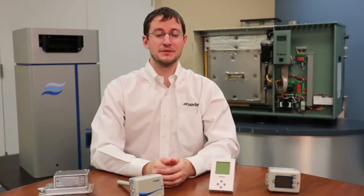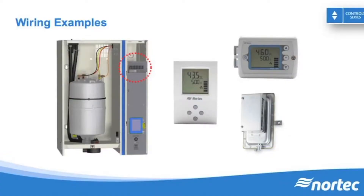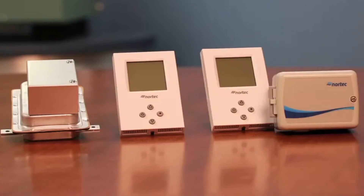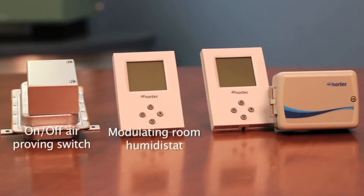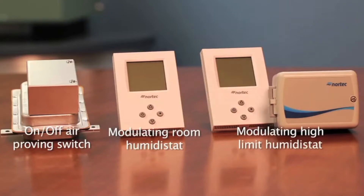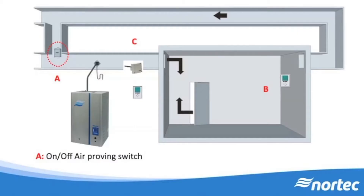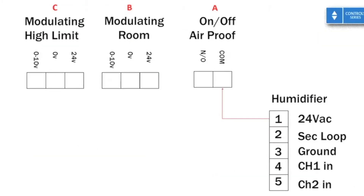Now that we've explored the three main controlling devices, we can see that there are various possibilities. We'll take you through various examples to make sure you have a better understanding of how to wire these devices. Consider the following three specific devices: an on-off air proving switch, a modulating room humidistat, and a modulating high limit humidistat. The on-off air proving switch starts from 24 volts AC on the humidifier's low voltage terminal strip, typically pin 1.